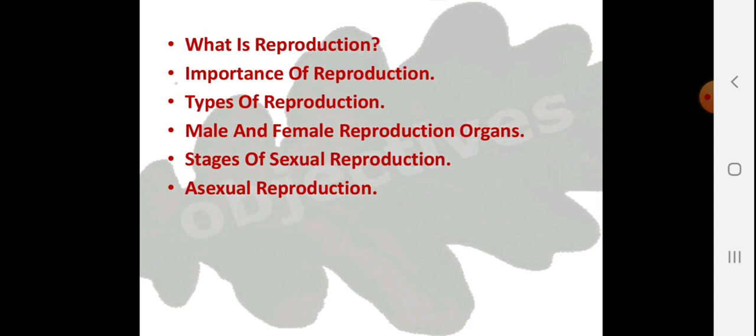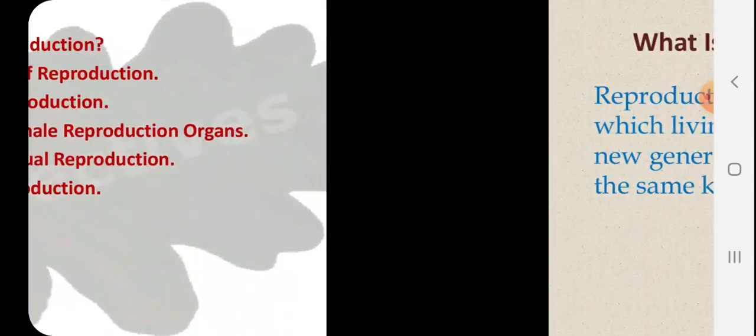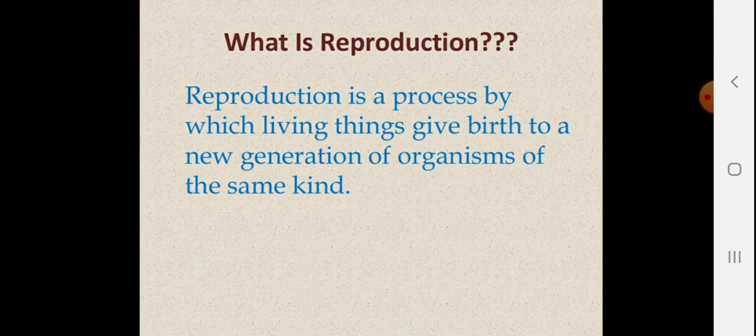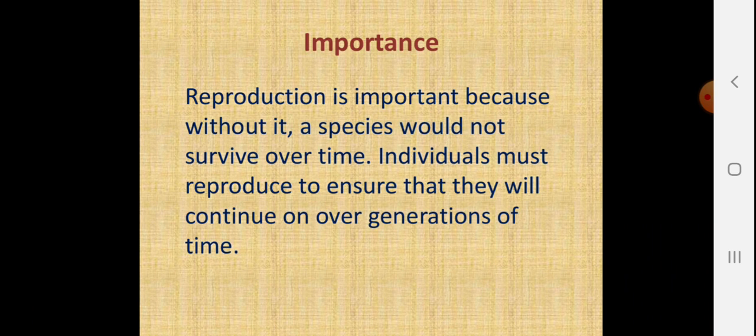Let's begin. What is reproduction? Reproduction is a process by which living things give birth to a new generation of organisms of the same kind. When you see puppies being born, or small cubs of a lion, that is reproduction — the mother is delivering offspring.